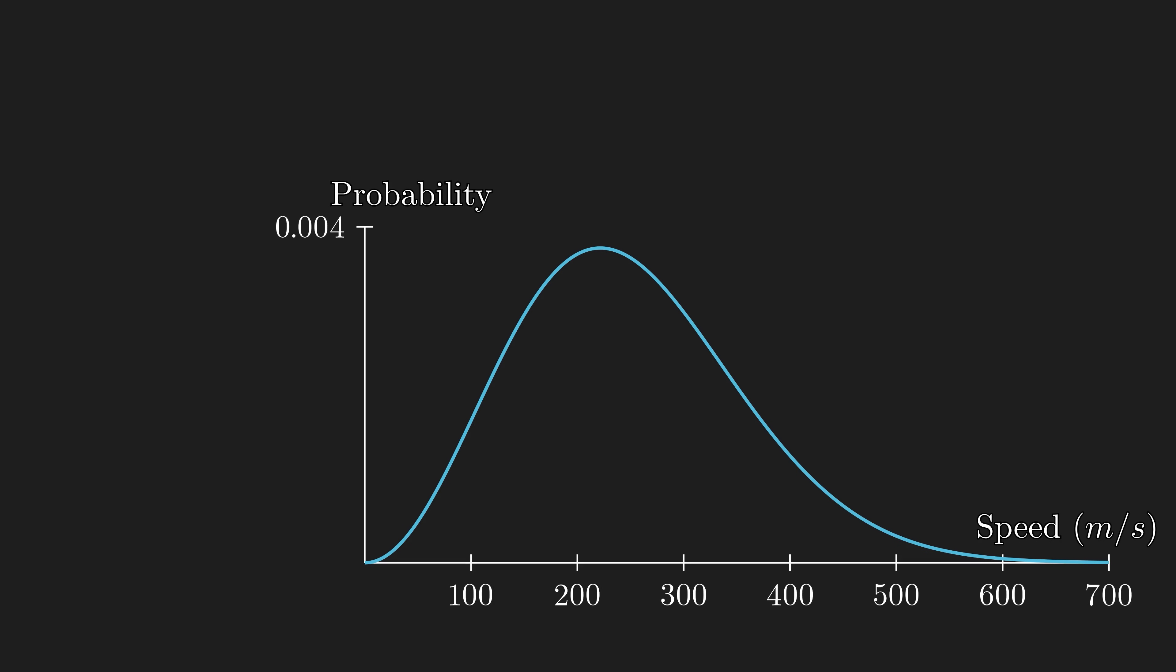This is the Maxwell-Boltzmann distribution, which is the probability distribution that represents speed of classical ideal gas. Classical meaning non-relativistic and non-quantum. And the mu here is the mean speed of the distribution, which varies with respect to the temperature and the mass of the molecule.